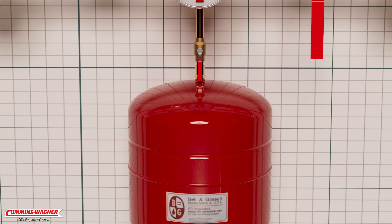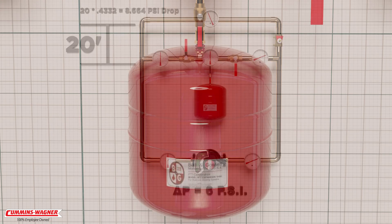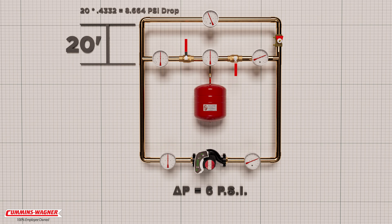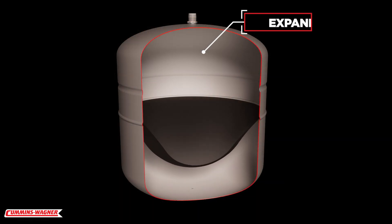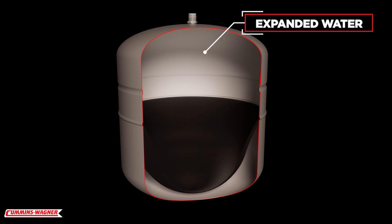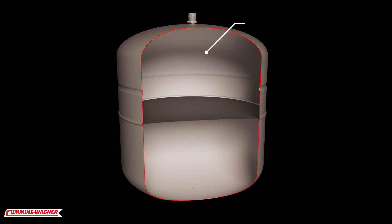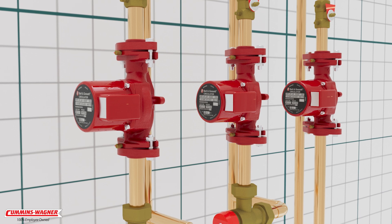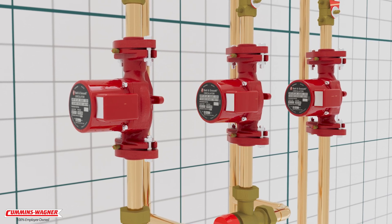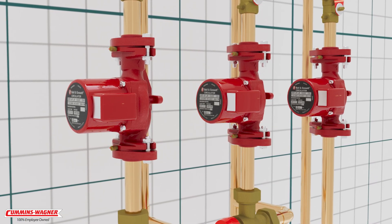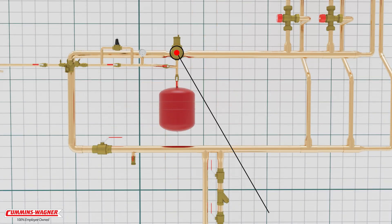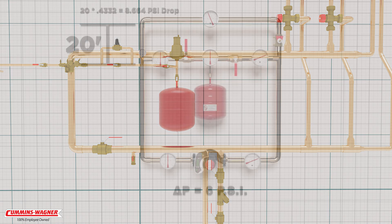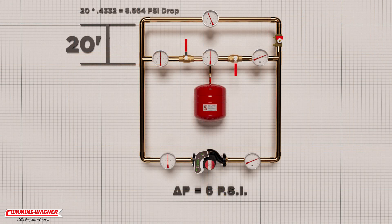But how does a circulator work if the expansion tank is isolated? The answer is very simple: the circulator has no effect on how the expansion tank functions. We use an expansion tank because fluid expands as it is heated, and the expansion tank allows a place for this expanded water to go. Since the circulator cannot increase or decrease water volume, it cannot affect the pressure at the expansion tank. This is why where we connect the expansion tank is referred to as the point of no pressure change.